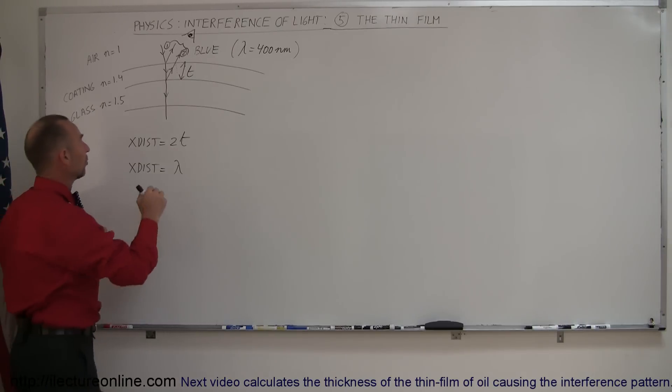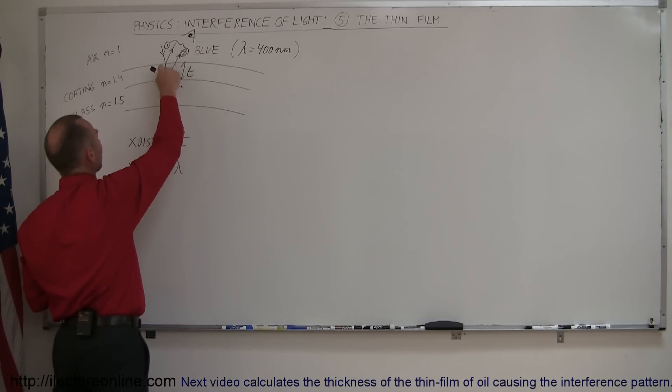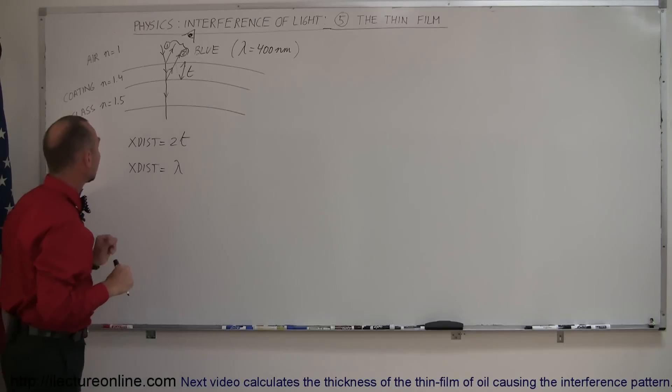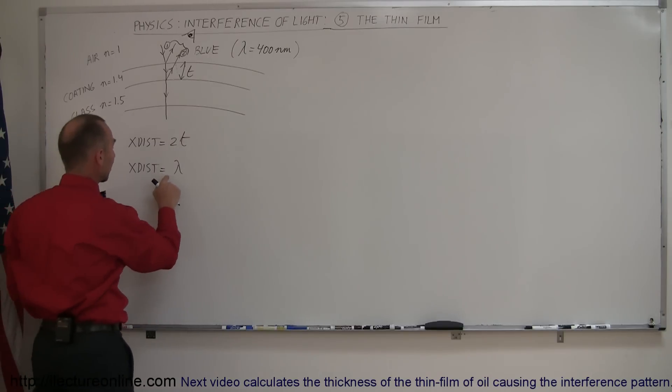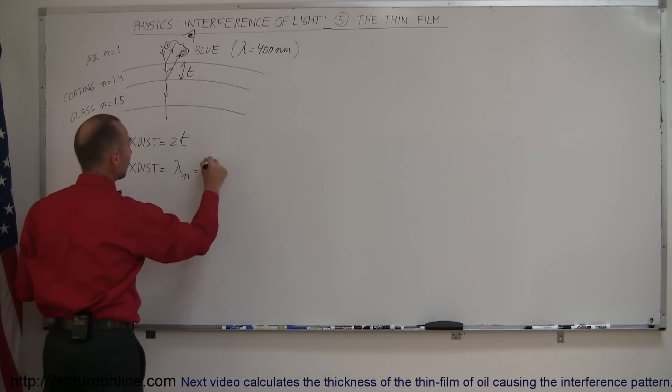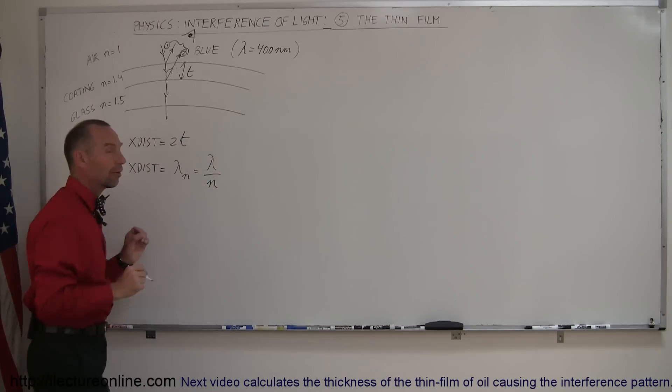But we have to be careful here. Since the light is traveling through a coating that has an index of refraction that's different from air, the wavelength will have shrunk, it'll be a smaller wavelength, so the extra distance traveled is equal to lambda sub n, which means it's equal to the wavelength in air divided by the index of refraction of that coating.